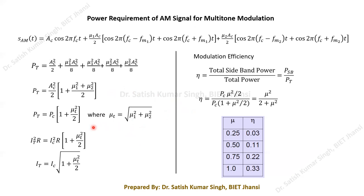The total power can also be expressed in terms of current. If PT = IT²·R and Pc = Ic²·R, then cancelling R gives IT = Ic·√(1 + μT²/2). This current-based representation is useful when questions are framed in terms of modulation current rather than power directly.